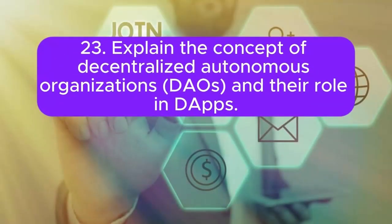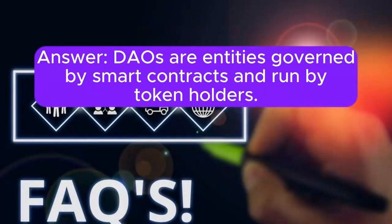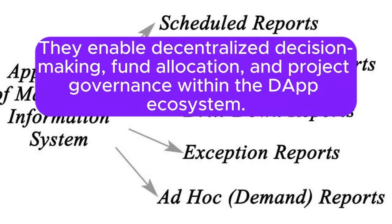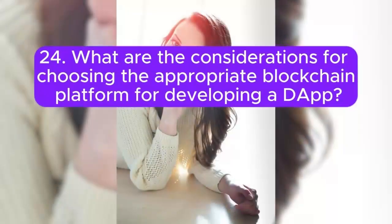23. Explain the concept of decentralized autonomous organizations (DAOs) and their role in DApps. Answer: DAOs are entities governed by smart contracts and run by token holders. They enable decentralized decision-making, fund allocation, and project governance within the DApp ecosystem.